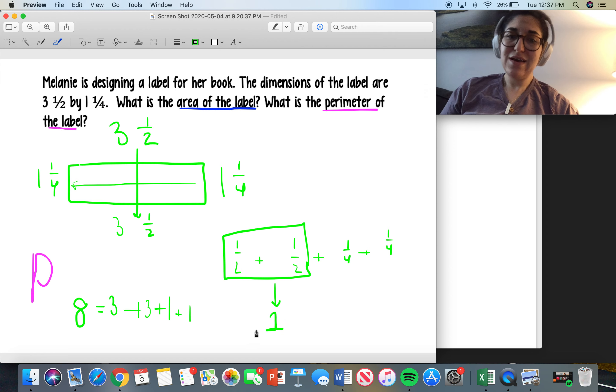So one-fourth plus one-fourth, just this part now, I'm just working on this, is going to be my denominator is going to stay the same. And I add my numerators. One plus one is two. So now I have the one-half and one-half is one. The one-fourth and one-fourth is two-fourths. And I'm going to add that to the eight that I had before. So now I have eight plus one is nine plus two-fourths.